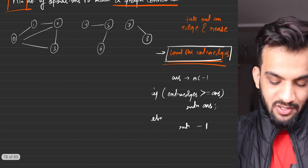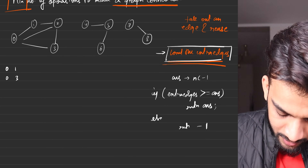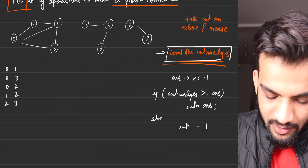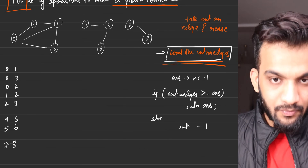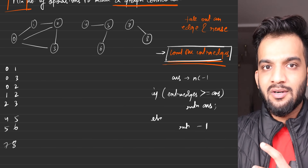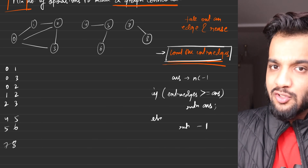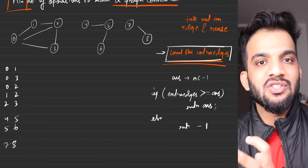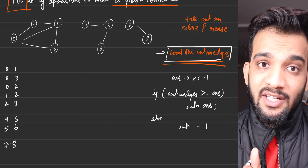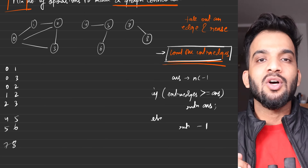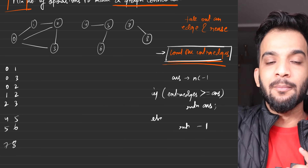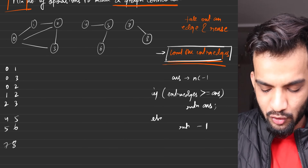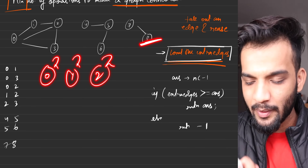Now the question comes: how do I count the extra edges, and how do I figure out the number of components? In order to count the extra edges, we write down all the edges: zero-one, zero-three, zero-two, one-two, two-three, four-five, five-six, seven-eight. The data structure which helps us in connecting dynamically at every step — the Disjoint Set — is what we will use. Initially, everyone is alone, all nodes zero through eight in their own set.